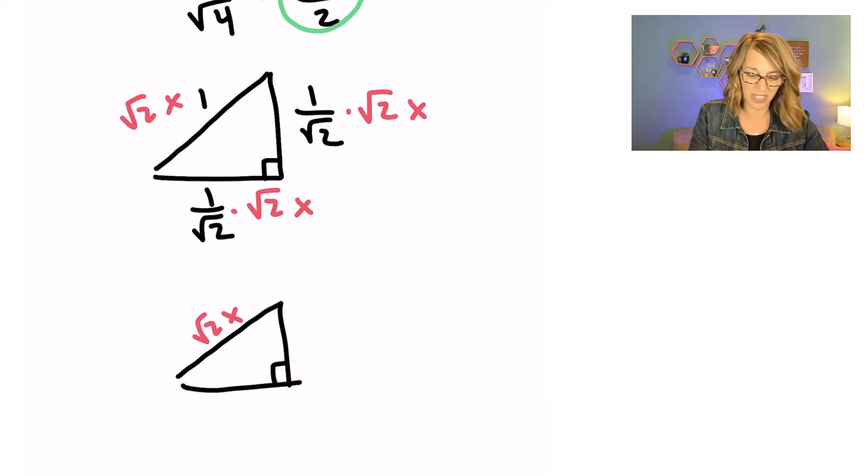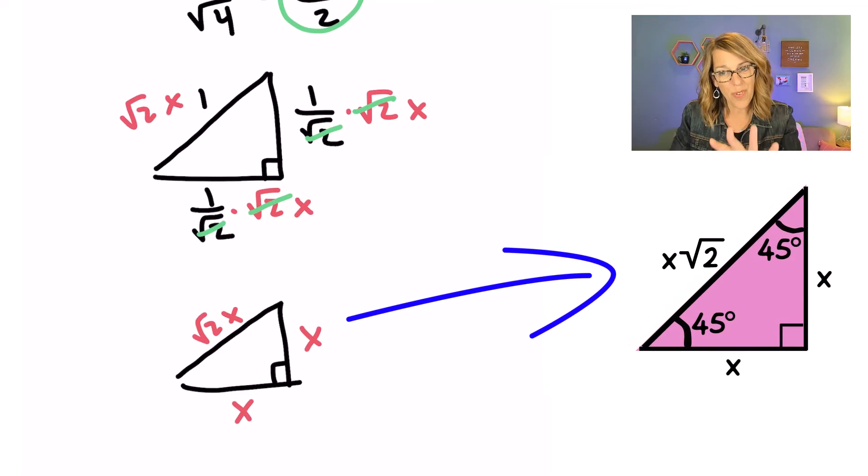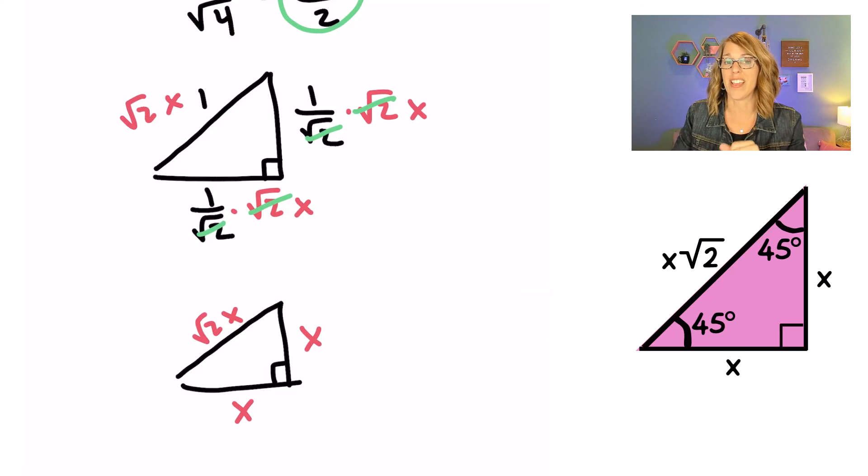The other two sides are going to be the same. I can cancel my radical 2s and I end up with an X on the other two sides. So X there and X there. Let's go ahead and use this formula now, this template, to solve our next triangle.